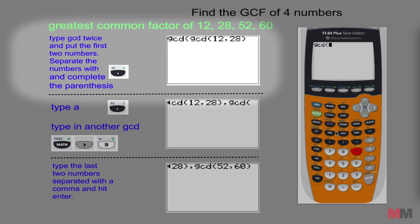Math, right arrow key, 9. Math, right arrow key, 9. Type in the two numbers, 12 and 28, and complete the parentheses. Then put a comma for step 2.